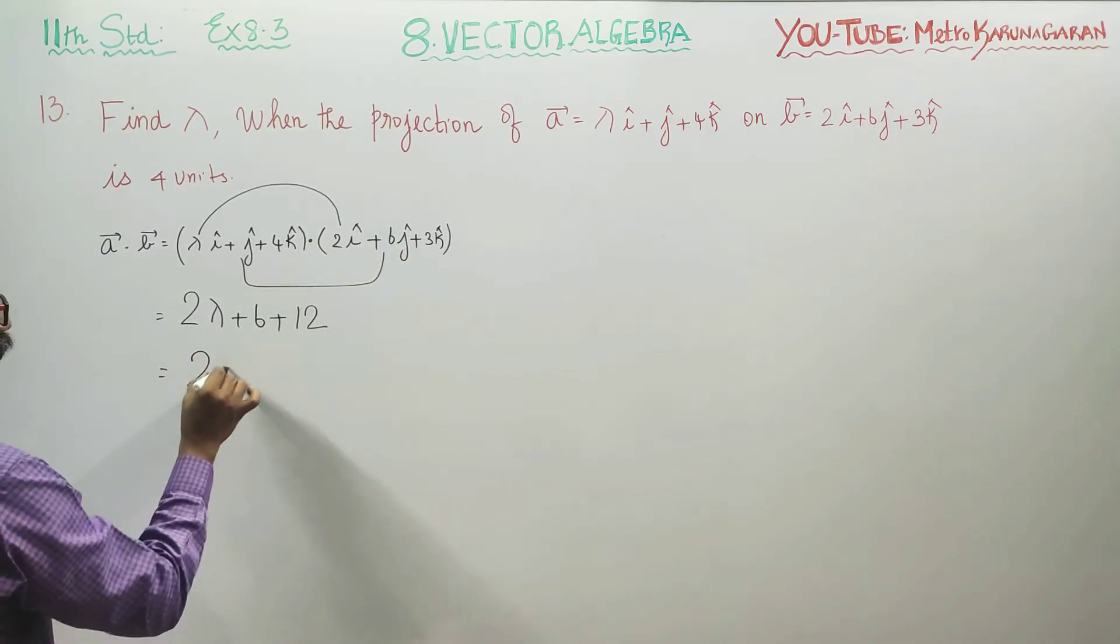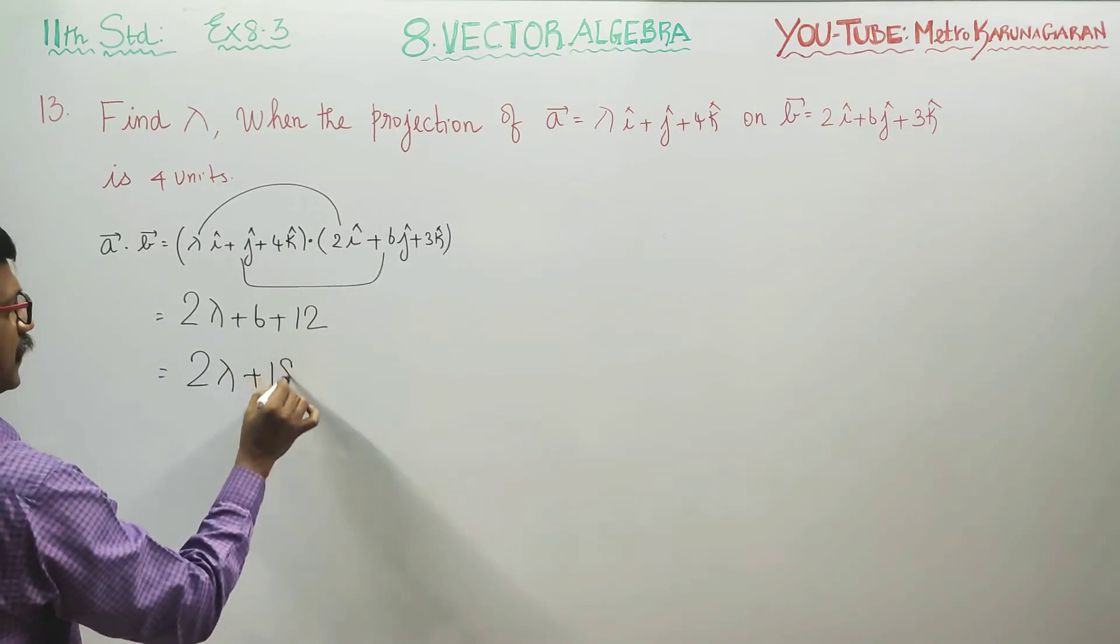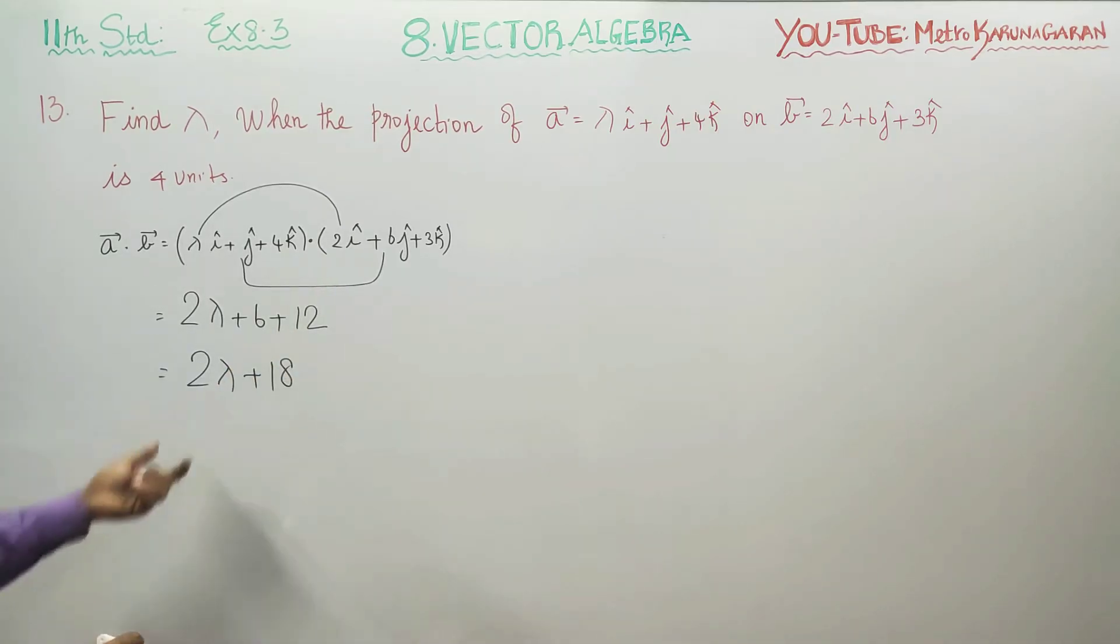Therefore my answer is 2 lambda, 6 plus 12 gives 18. This is A dot B.